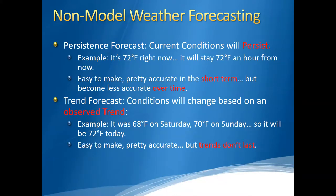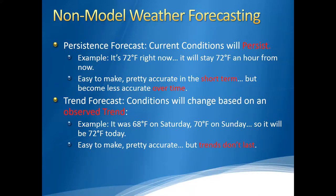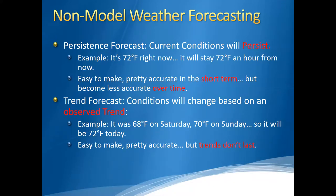The first non-model forecasting technique is called persistence. In a persistence forecast, whatever is currently happening is expected to continue — it's expected to persist. If the current temperature is 72 degrees, it will remain 72 degrees. If today's high was 72, a persistence forecast says it will be 72 tomorrow. Whatever the current condition is, it just stays the same. Believe it or not, this is actually a really good model for short-term forecasts. If you look outside, it's cold, and you're leaving in 30 minutes, grabbing your jacket means you've just made a persistence forecast.